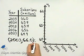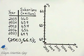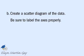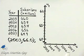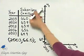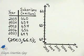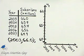I'll let you write the other four ordered pairs. Now for part B, we want to create a scatter diagram of the data and label the axes. The horizontal axis is of course year, and the vertical axis is subscribers in millions. Let's create that scatter diagram.